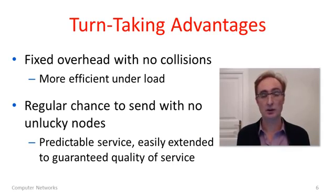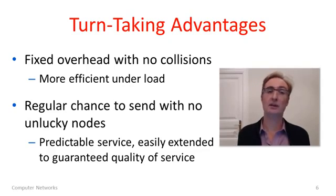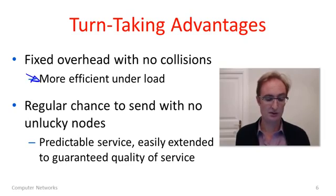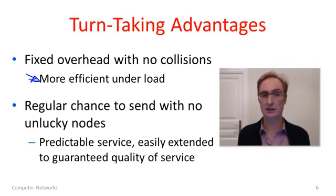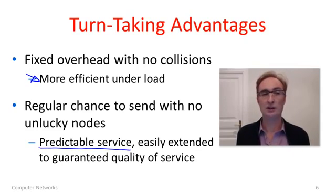This kind of turn-taking protocol — token ring as well as other turn-taking protocols — does have advantages. In this scheme, there is a fixed overhead with no collisions. The collisions are gone as a source of overhead, and in particular, we won't have a large number of collisions as the load gets high — just the fixed overhead. Because of this, turn-taking protocols are more efficient under high load. We also get a regular opportunity to send, which leads to more predictable levels of service. You know that you'll get to send a packet every, say, 100 milliseconds or so.